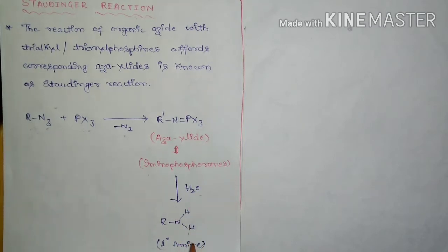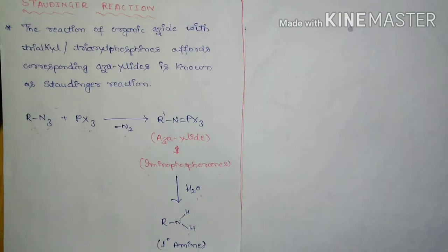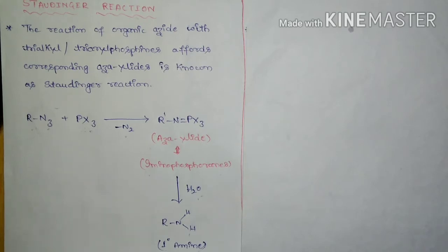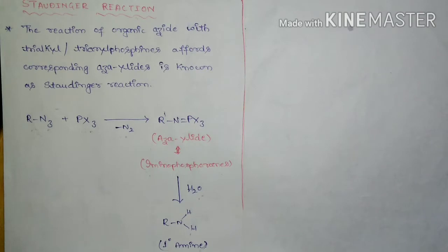The amine is obtained by hydrolysis of the iminophosphorane. When this iminophosphorane undergoes hydrolysis, it leads to the formation of a primary amine. Hence, the Staudinger reaction can be called a mild reduction reaction which leads to the formation of a primary amine from the corresponding organic azide.